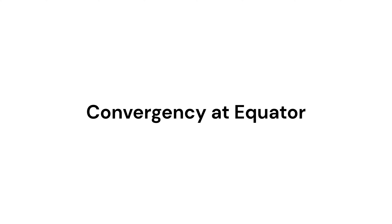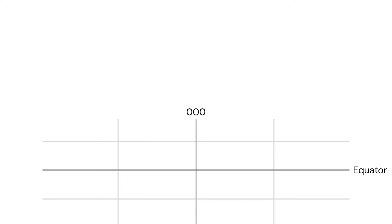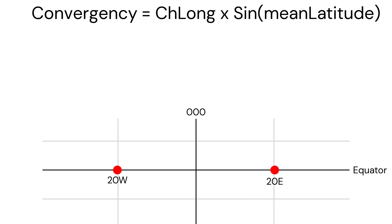Similarly, let's find convergency at equator. Let's say you're moving from point A to point B on equator, from 20 east to 20 west. We can find convergency using the same formula: Convergency equals ChLong into sin mean latitude.